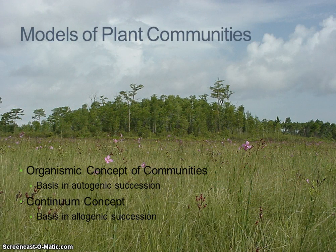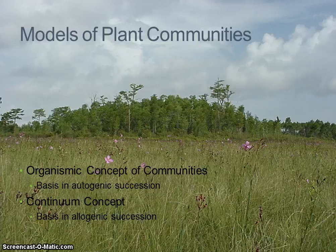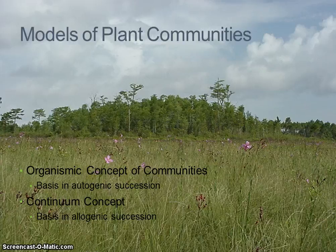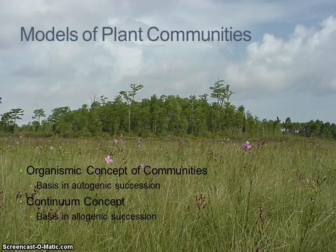Defining boundaries between communities is often difficult. The community is a spatial concept and communities are distinguished based on observable differences in their physical and biological structure. One major question community ecologists face is how different two adjacent areas must be before we call them separate communities. The answer is based on the degree of similarity or difference and can be rather subjective, making the distinction between communities somewhat arbitrary based on the criteria for classification.